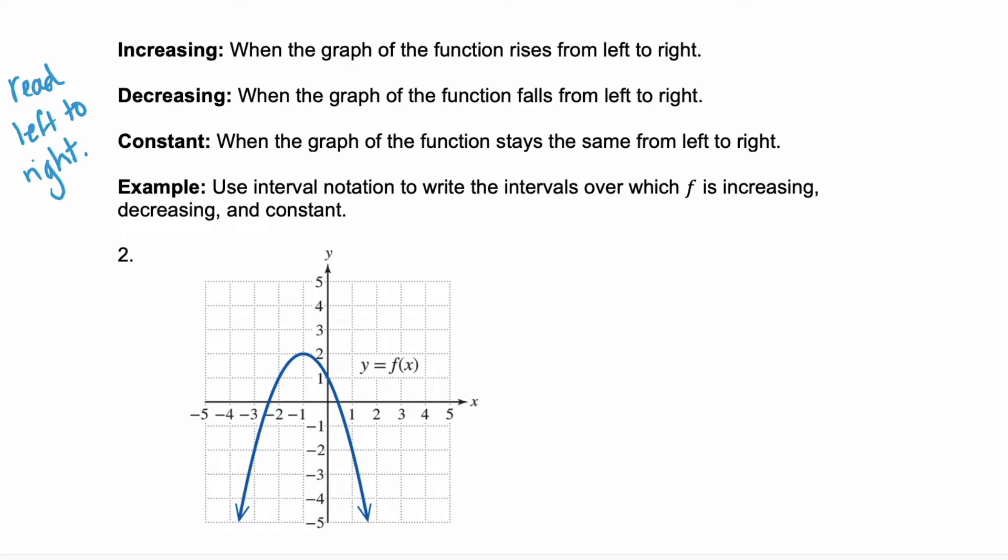Let's look at this example, example two. We're going to use interval notation to write the intervals over which f is increasing, decreasing, and constant. Start at the furthest left part of the graph. Notice that there's an arrow here that's pointing to negative infinity. And the shape of this line or graph has the x values heading towards negative infinity as well.